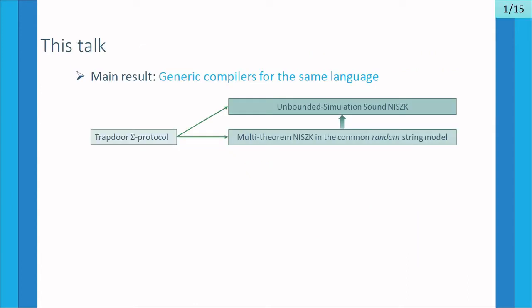In this talk I'm going to focus on our main result, which is a generic compiler that works for the same language. In its simple form, this compiler takes as input a Trapdoor Sigma protocol and outputs a multi-theorem non-interactive zero-knowledge argument system that achieves statistical zero-knowledge in the common random string model. We can upgrade this compiler to produce an unbounded simulation sound NIZK.